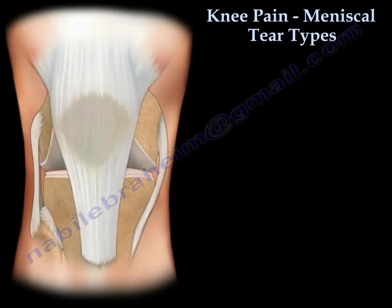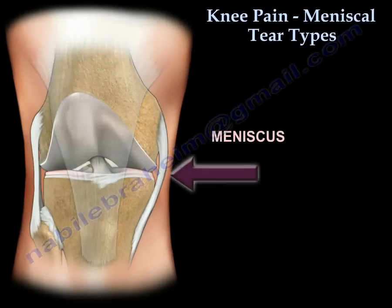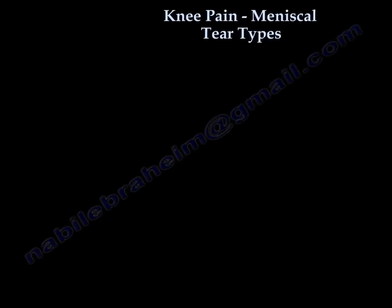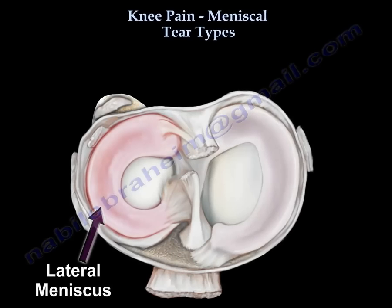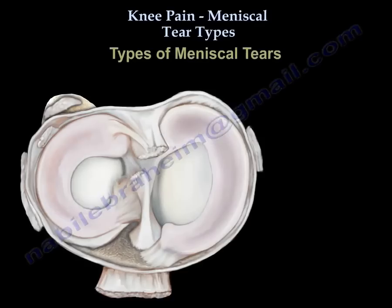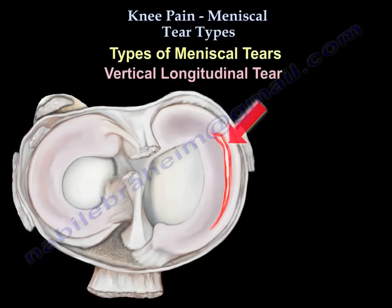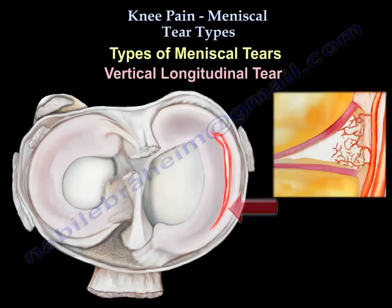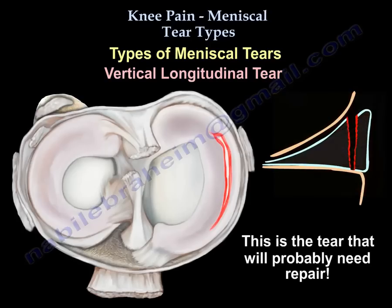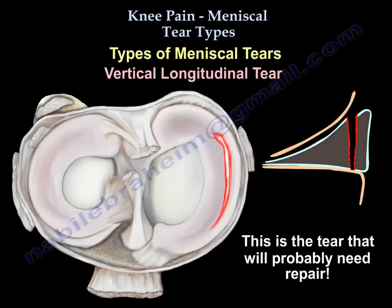Knee pain, meniscal tear, type of the tear. The first type is called vertical longitudinal tear. You can see here in the diagram how that tear will look like. This is the tear that probably will need repair.